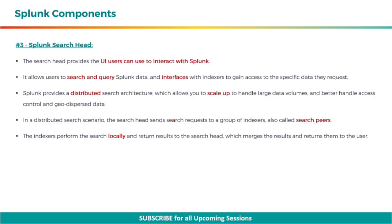The third component is the Splunk search head. The search head provides the UI users can use to interact with Splunk. It allows users to search and query Splunk data, and interfaces with indexers to gain access to the specific data they request. Splunk provides a distributed search architecture, which allows you to scale up to handle large data volumes, and better handle access control and geo-dispersed data. In a distributed search scenario, the search head sends search requests to a group of indexers, also called search peers. The indexers perform the search locally and return results to the search head, which merges the results and returns them to the user.